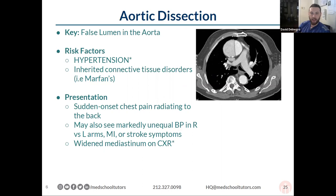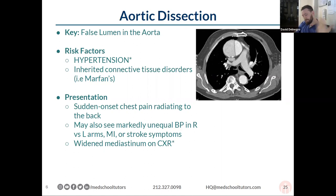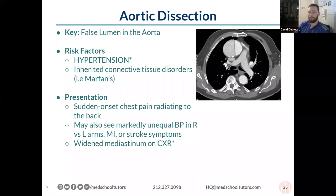Differentiating dissection from aneurysm: dissection is basically a splitting of the wall that allows for a false lumen — classically tearing onset chest pain radiating to the back. Aneurysm is just the growth of the aorta, usually associated with elderly male smokers — smoking is the biggest risk factor, causing dilation over time. The aneurysm eventually gets big enough to burst because of the thinning of the wall. Dissection: a tear creating a false lumen. Aneurysm: a growth over time.